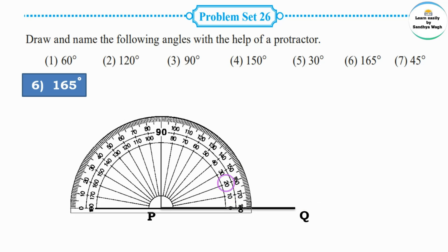Counting: 10 degrees, 20 degrees, 30 degrees, 40 degrees, 50 degrees, 60 degrees, 70 degrees, 80 degrees, 90 degrees, then 100 degrees, 110 degrees, 120 degrees, 130 degrees, 140 degrees, 150 degrees, and then 160 degrees. We need to draw a 165 degree angle, so after 160 degrees, count the small lines.